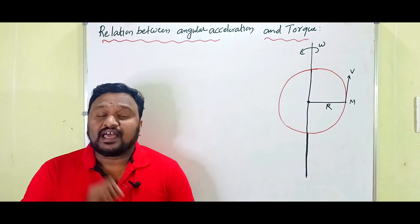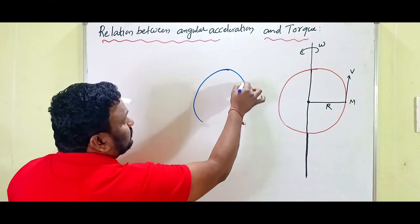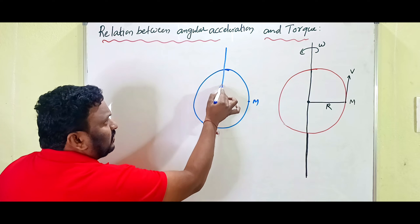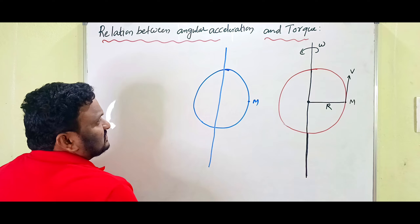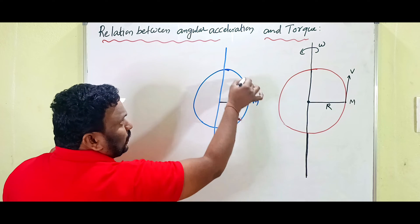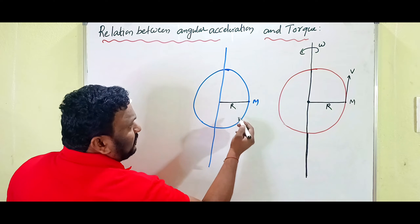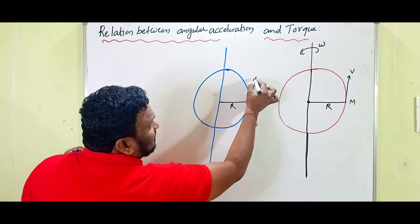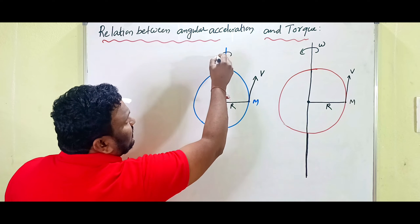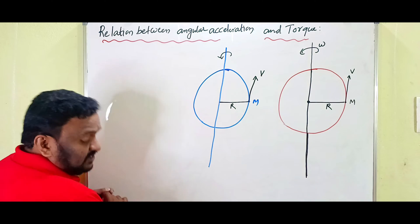Consider a body of mass m rotating with respect to one fixed vertical axis in a circular path of radius r. When a body moves along a circular path, at any point we can draw a tangent line that gives the direction of linear velocity, while the angular velocity is directed along the axis of rotation. Using this setup, we derive the relation between angular acceleration and torque.